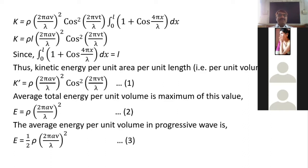With this result, the total kinetic energy K equals ρl · (2πav/λ)² · cos²(2πvt/λ). Kinetic energy per unit volume K' = K/l equals ρ · (2πav/λ)² · cos²(2πvt/λ), as shown in equation 1.